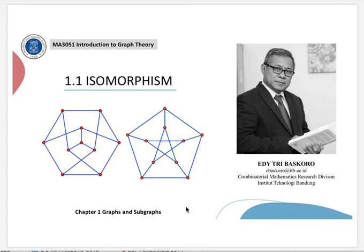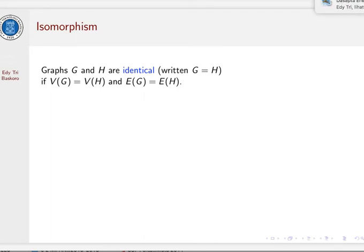Let's start with the definition. Two graphs G and H are identical if they both have exactly the same vertex set and edge set. If two graphs are identical, then they can be clearly represented by identical diagrams. However, it's also possible for graphs that are not identical to have essentially the same diagram. In this case, we call these graphs isomorphic.